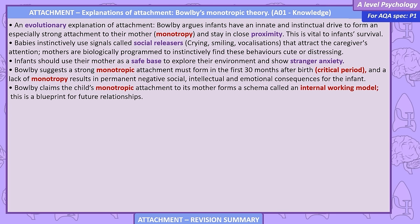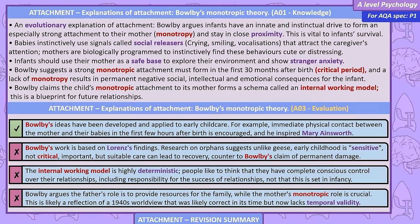Bowlby's monotropic theory. Bowlby suggests that a strong monotrophic attachment must form in the first 30 months after birth — the critical period. A lack of monotrophy results in permanent negative social, intellectual and emotional consequences for the infant. Bowlby claims the child's monotrophic attachment to its mother forms a schema called an internal working model — a blueprint for future relationships. Bowlby's ideas have been developed and applied to early childcare; for example, immediate physical contact between mother and baby in the first few hours after birth is encouraged. He also inspired Mary Ainsworth.